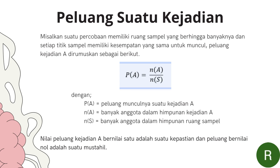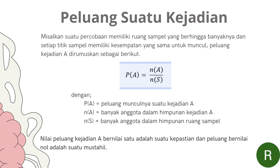Di peluang ini, nilai peluang kejadian A bernilai 1 adalah suatu kepastian, dan peluang bernilai 0 adalah suatu hal yang mustahil. Berarti kalau kita menemukan nilai suatu peluang bernilai 0, berarti itu salah, karena setiap peluang itu hasilnya antara 0 sampai 1.